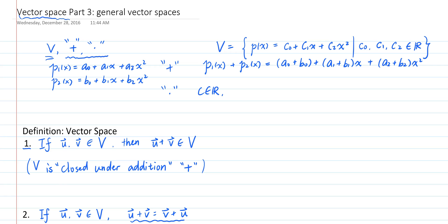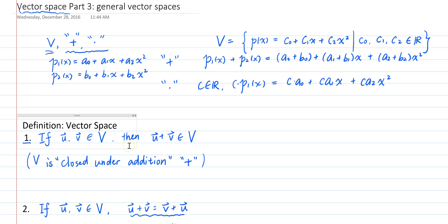And to scalar multiply a polynomial, you simply multiply each term by the same scalar. Then you can verify that V has the same 10 properties. Let's verify those one by one.